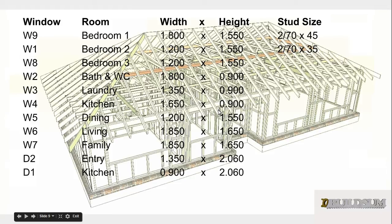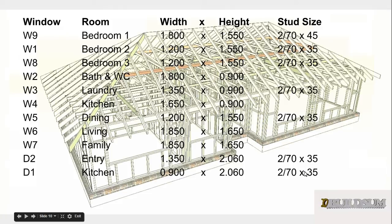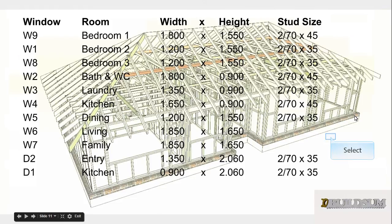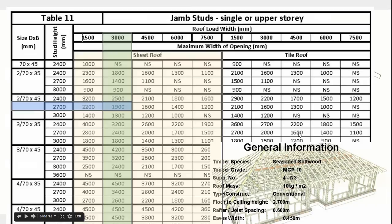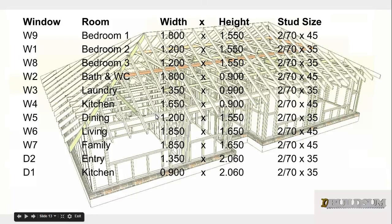At this stage, jump through the table and work out which sizes apply. Anything up to 1400 wide we can use 70 by 35 — that covers several openings on the schedule. Anything up to 1900 we can use 70 by 45, so our 1800 and 1850 openings can also use 70 by 45, since the maximum in the table was 1900. So we now know the size and how many studs we need next to our openings.